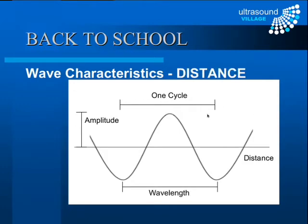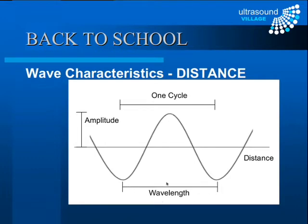A related but different graph plots all molecules' displacement at a given moment in time — a snapshot. Here the amplitude is the same, but the distance between two successive molecules in a cycle is known as the wavelength. So in this graph we are plotting amplitude against distance, whereas in the previous graph we were plotting amplitude against time and observing the period.